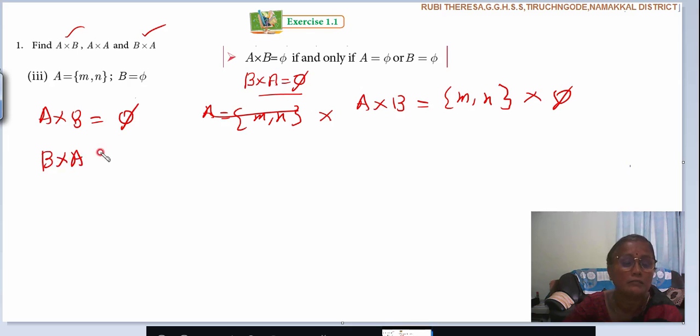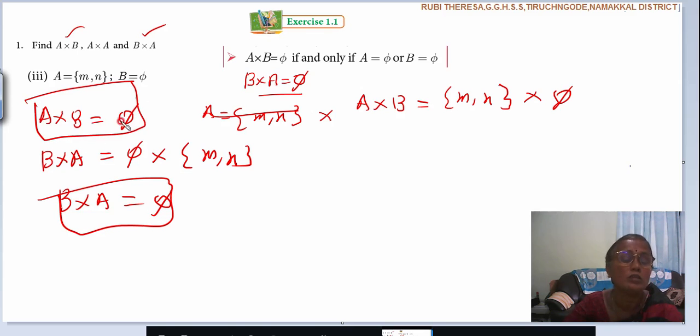Similarly, B cross A. Because first, when you are seeing the problem, what you are able to answer, that question you have to answer it first. That is a better way to answer. B cross A. What is B? M, T cross. What is A? M, N. Is it possible? No. So only just I said, without doing this, you will be able to write the answer. B cross A equal to M, T. A cross B equal to M, T.